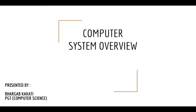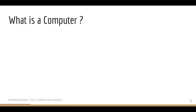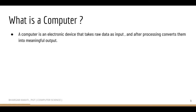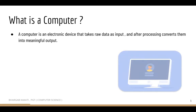Hello and welcome to the chapter on computer system overview. This is part one, where we are going to deal with the introduction to computer systems. Let's start with the definition of a computer. A computer is an electronic device that takes raw data as input and after processing converts it into a meaningful output.